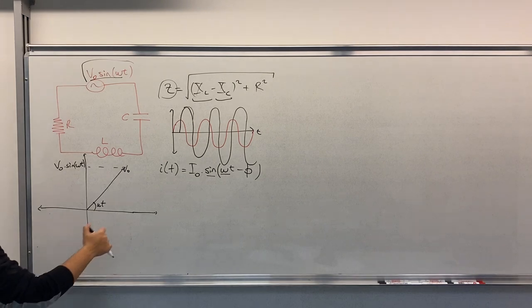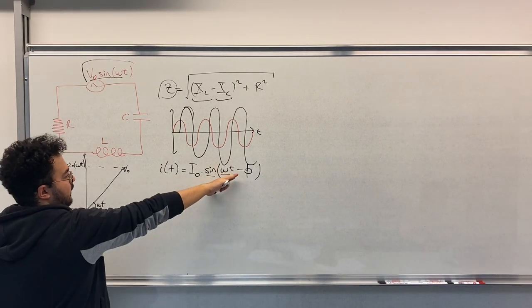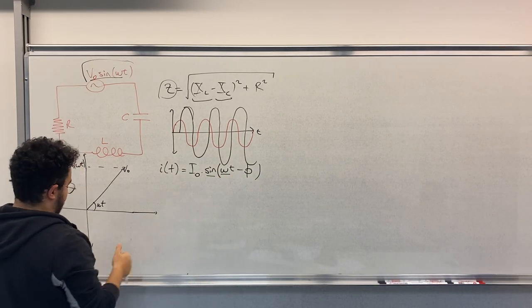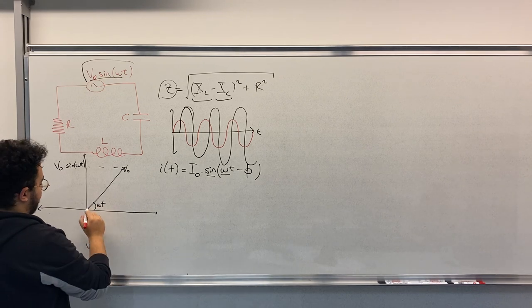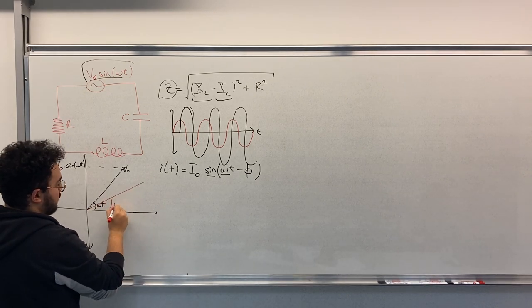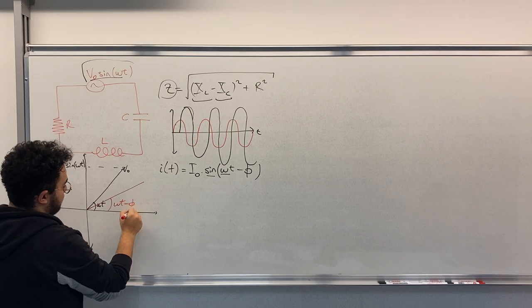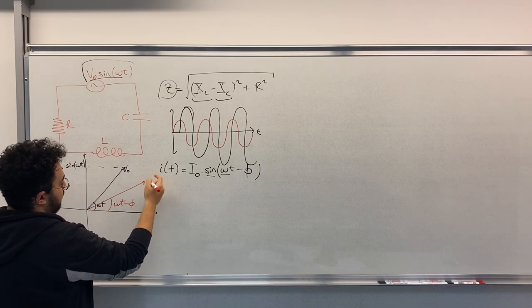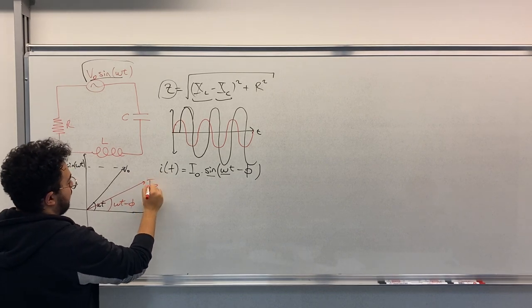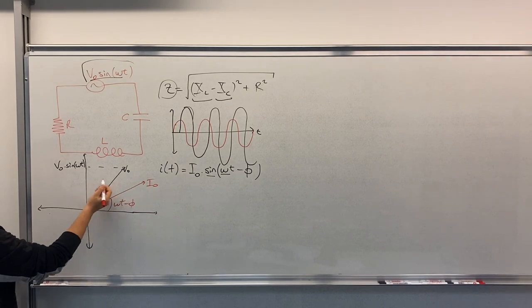Now we assume that the current has a phase shift. Let's say this one, this is omega t minus phase. This is the current here.